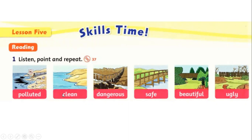Polluted and clean have opposite meanings. Now let us look at the words dangerous and safe. As you can see in the picture, it's unsafe to walk here — it's dangerous. However, in the second picture it's safe to walk. Dangerous and safe have opposite meanings too.